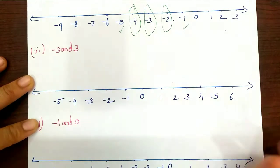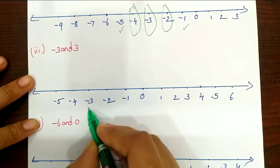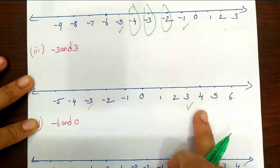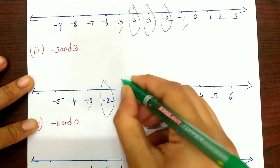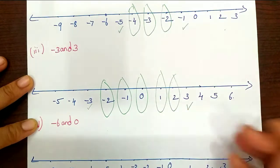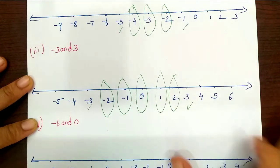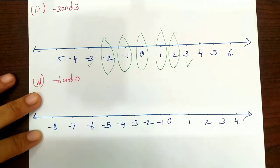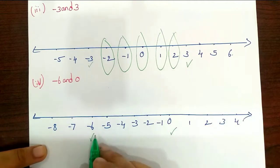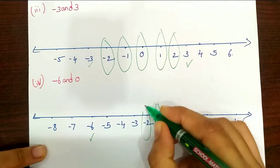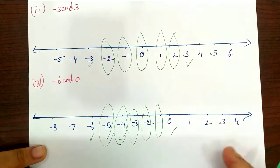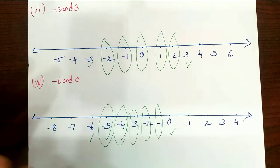Between minus 3 and 3, the integers in the middle are minus 2, minus 1, 0, 1, 2 — so these are 5 numbers. Next, between minus 6 and 0, the integers in the middle are minus 1, minus 2, minus 3, minus 4, minus 5.